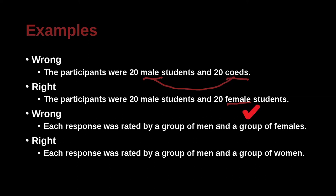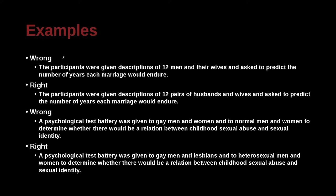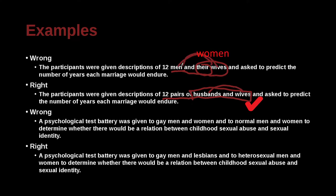Each response was rated by a group of men and a group of females. The participants were given descriptions of 12 men and their wives and asked to predict the number of years each marriage would endure. The correct sentence uses '12 pairs of husbands and wives,' because we either say men and women or we say husbands and wives — not 'men and their wives' as if those are somehow paired differently.